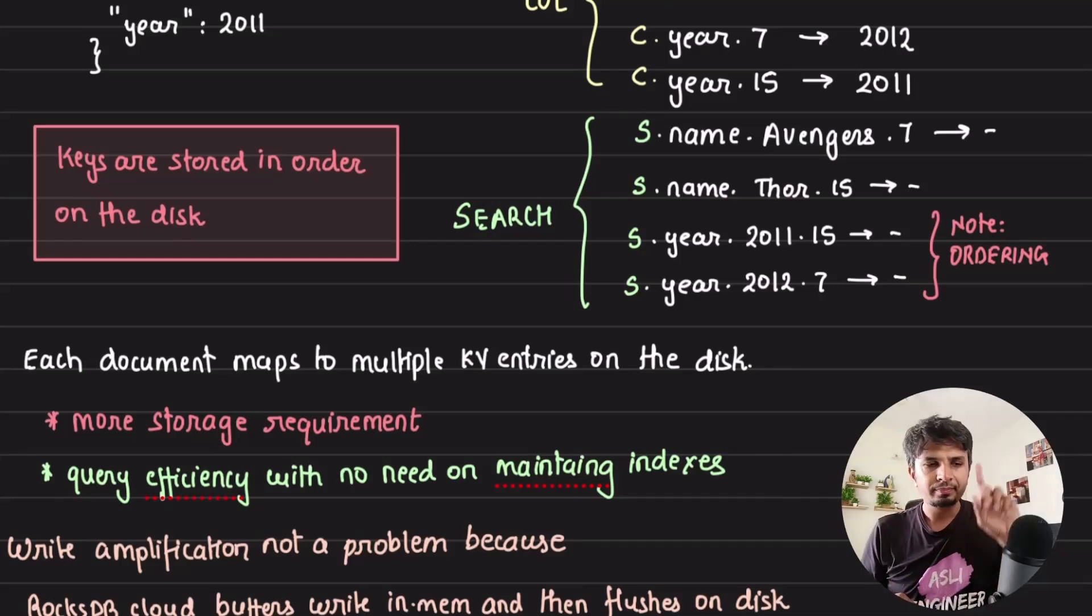Now first thing first, we are taking a trade-off that given each document we are putting in is fanned out across so many key-value pairs, you'd say there is a very large storage requirement. Yes, the storage requirement is high, but it's not very high. In subsequent videos we'll look into various optimizations that it puts in to minimize the additional storage required. Second, you'd say that although we are doing it because all of the types of queries that I could fire on my data is efficient, I don't need to manage and maintain indexes and remember to create indexes. Convenience over storage cost, we would always go for convenience.